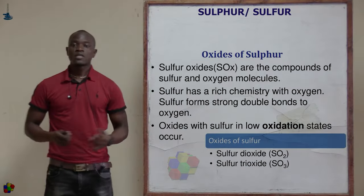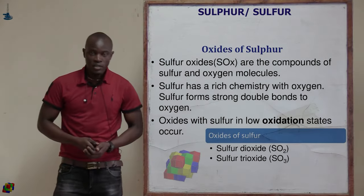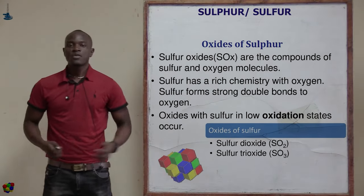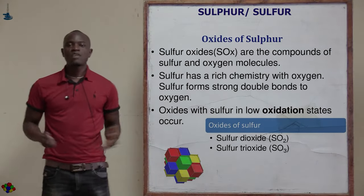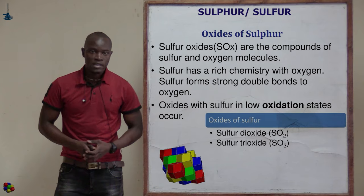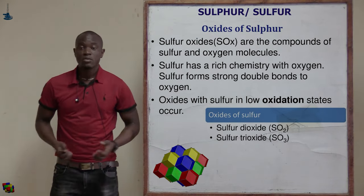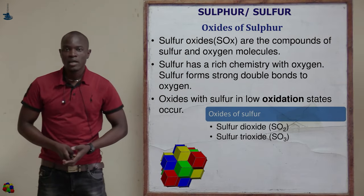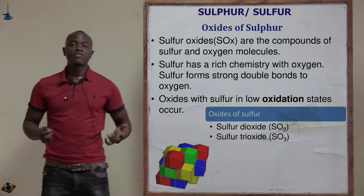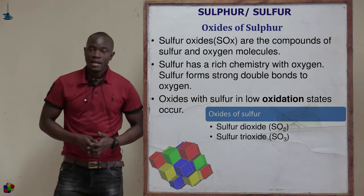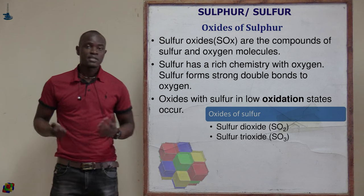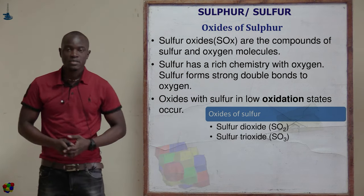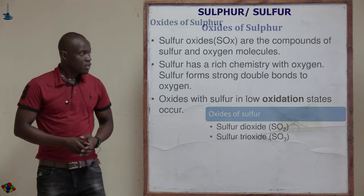Let's now look at oxides of sulfur. For sulfur, we see that we have two main oxides: the first oxide is sulfur(IV) oxide and the next one is sulfur(VI) oxide.